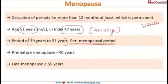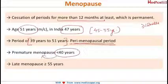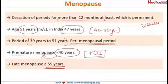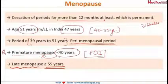The perimenopausal period is the period just before menopause. If menopause occurs before the age of 40 years, we call it premature menopause, and this is seen in cases of premature ovarian insufficiency. If periods are continuing beyond the age of 55 years, we call it late menopause.